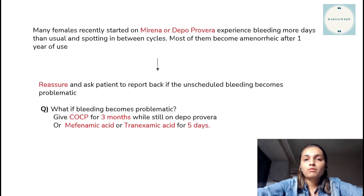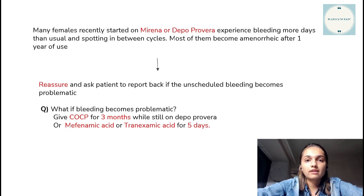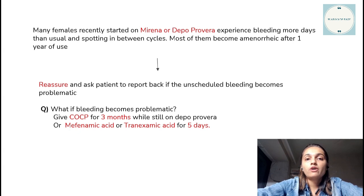Many females who are prescribed Depo-Provera or Mirena experience breakthrough bleeding — spotting between cycles. You counsel them by telling them this bleeding is harmless and reassure them. Tell them to wait for three to six cycles to give the body a chance to adjust, but to report back if there is a lot of uncontrolled bleeding. When the bleeding becomes problematic, prescribe combined oral contraceptive pills along with Mirena or Depo-Provera for three months, or prescribe mefenamic acid or tranexamic acid for five days.